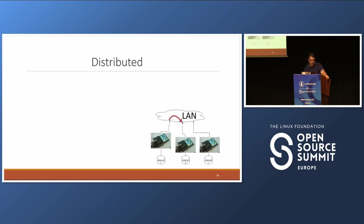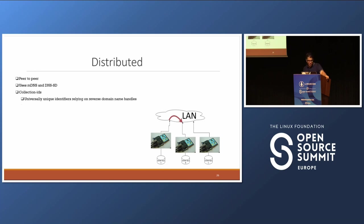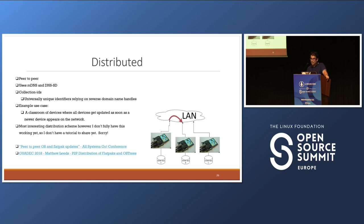Lastly, the distributed option. We again have three embedded Linux devices that are OSTree enabled, but now they're on a local area network — it's peer-to-peer. They use mDNS to find each other, and DNSSD for service discovery to figure out which repos are being served and who has what refs. They do this using collection IDs, which are universally unique identifiers relying on reverse domain name handles. An example is a classroom of devices where all devices get updated as soon as a newer device appears on the network. In my opinion this is the most interesting distribution scheme, however I don't fully have this working yet, so I don't have a tutorial to share. Here are two links that go into more details on the distributed option.